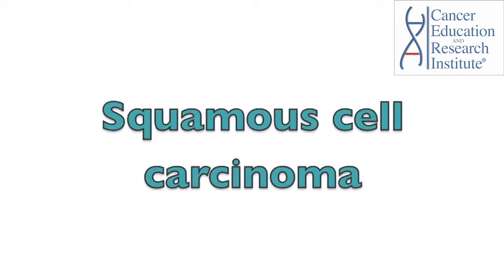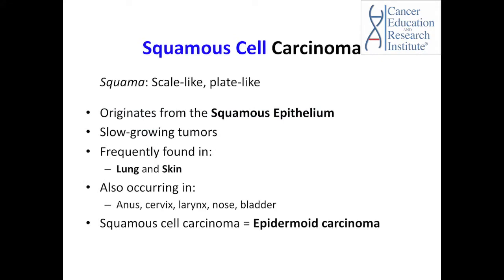Let's talk about squamous cell carcinoma. Squamous comes from the word squama, which means scale-like or plate-like. Squamous cell carcinoma is a slow-growing malignant tumor of squamous epithelium, which is frequently found in the lungs and the skin. It can also occur in the anus, cervix, larynx, nose, and bladder. This cancer type is also called epidermoid carcinoma.